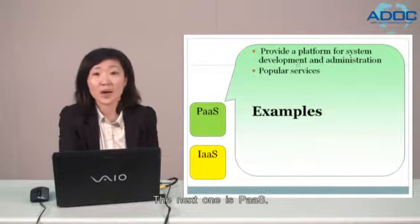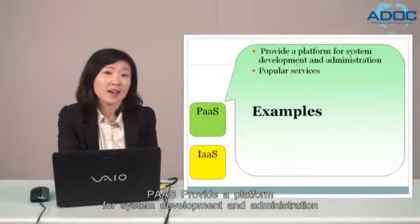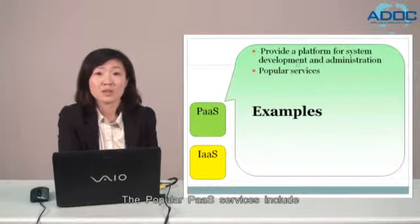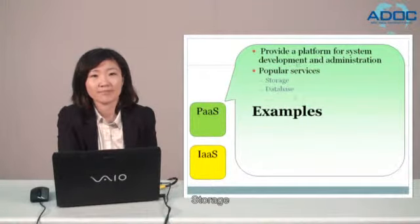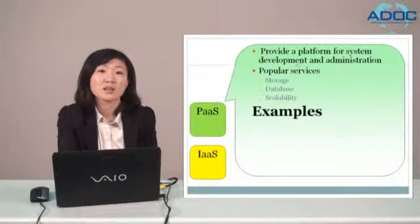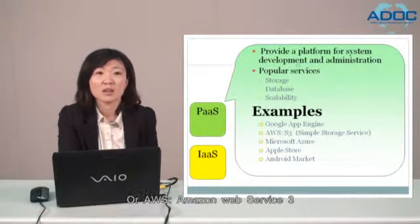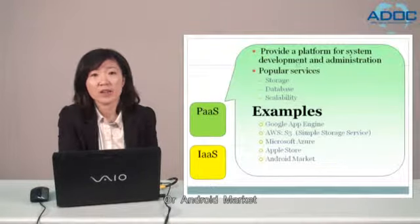The next one is PaaS. PaaS provides a platform for system development and administration. The popular PaaS services include storage, database, and scalability. Examples are Google App Engine, AWS S3, Microsoft Azure, Apple Store, or Android Market.